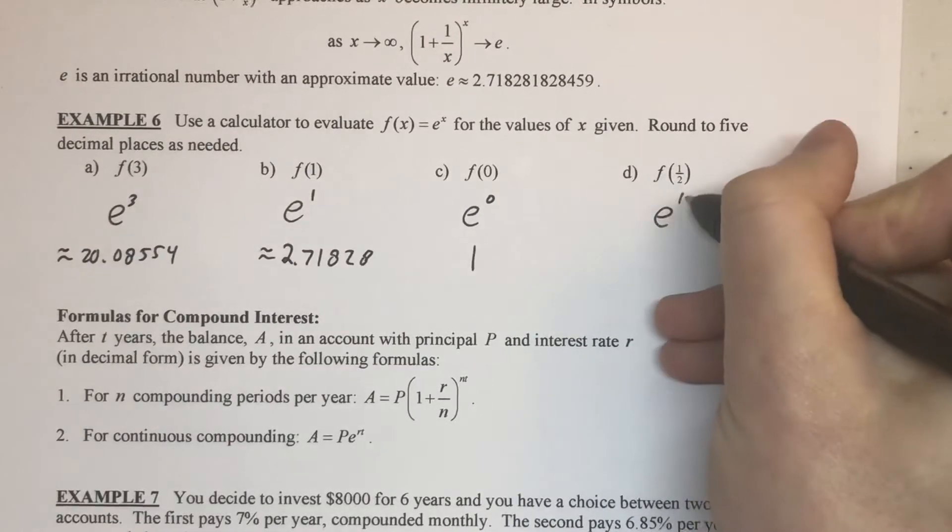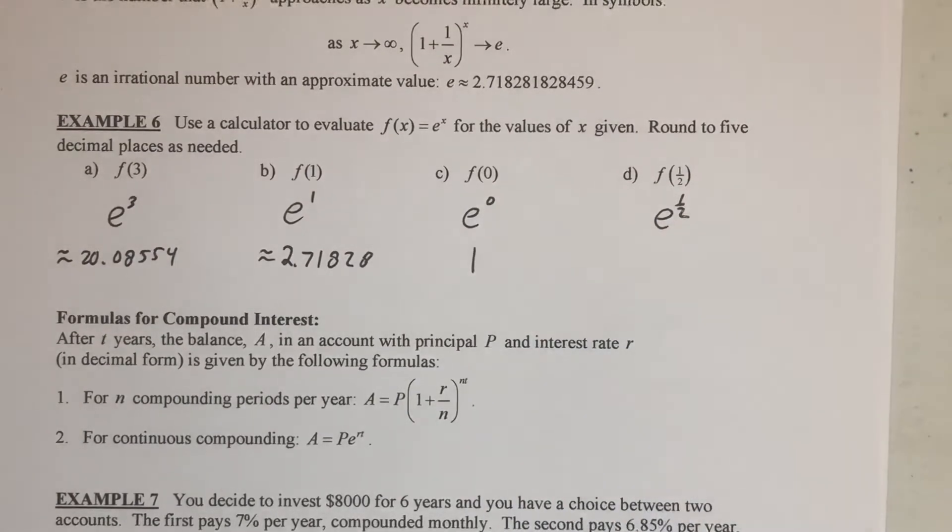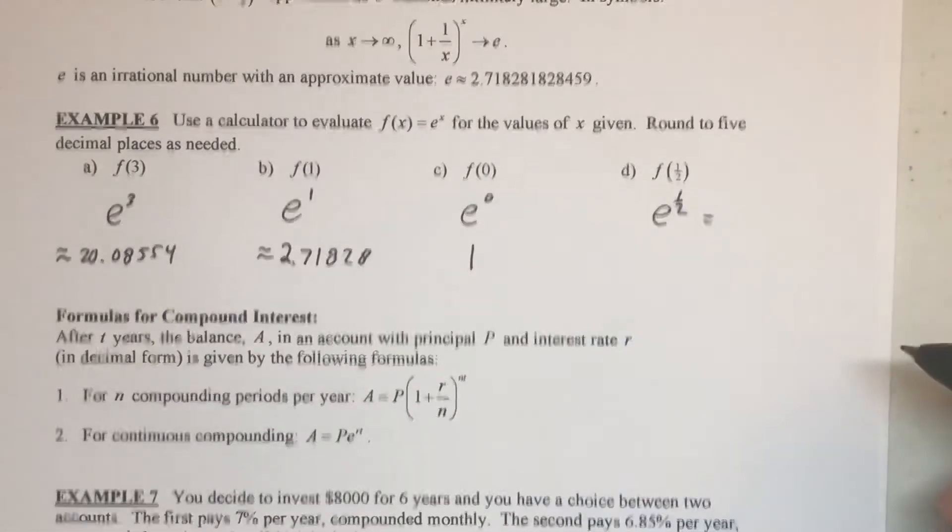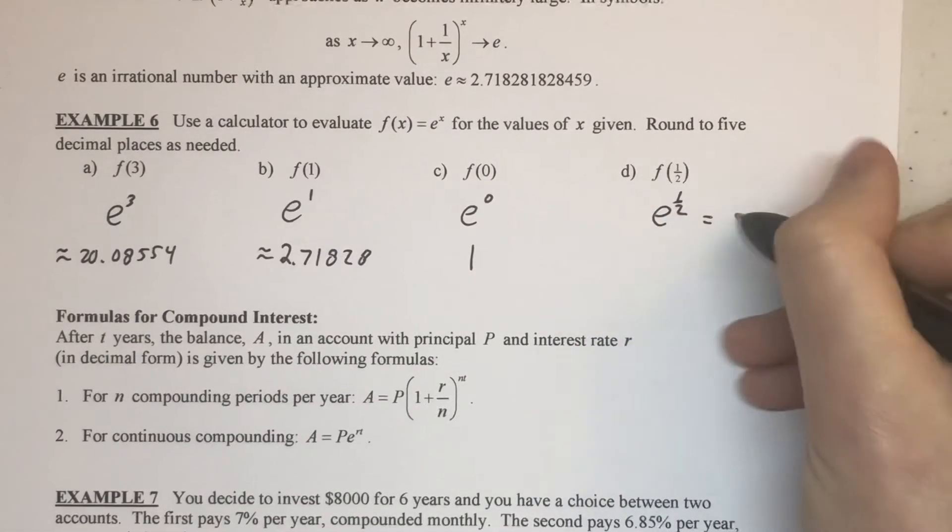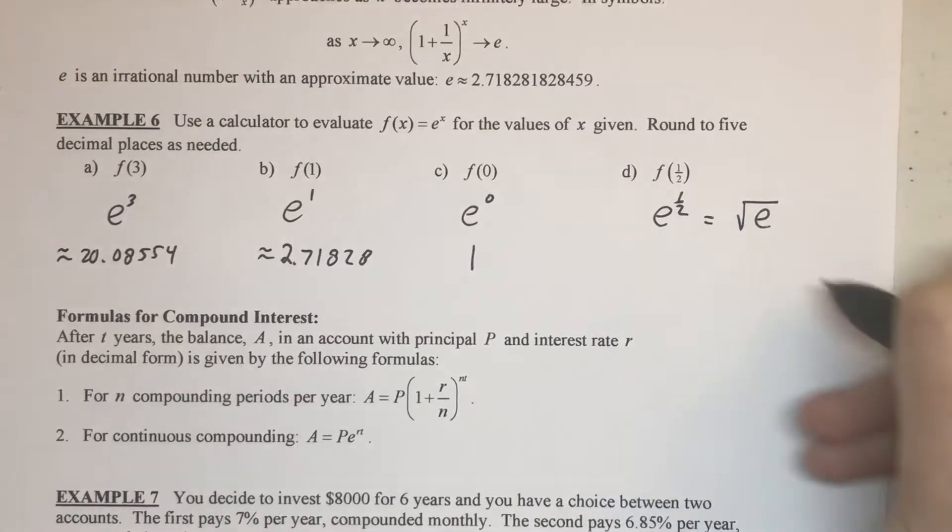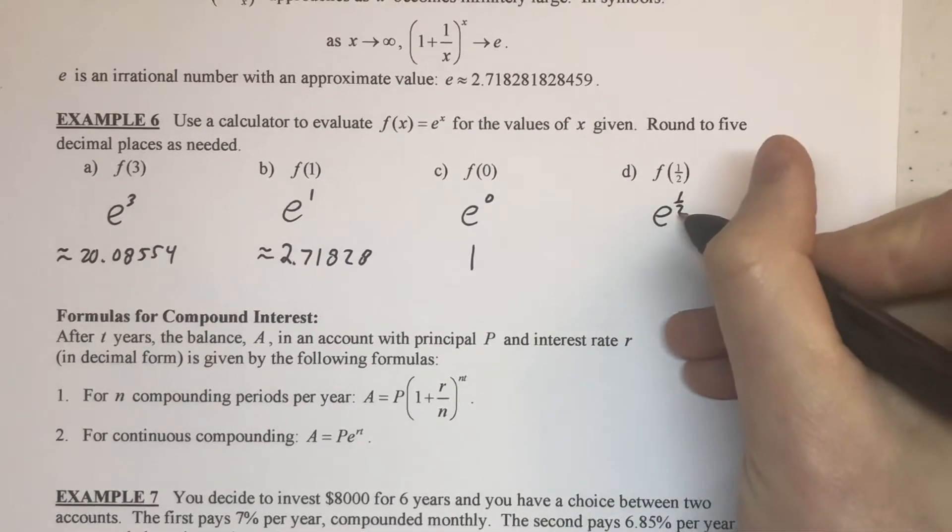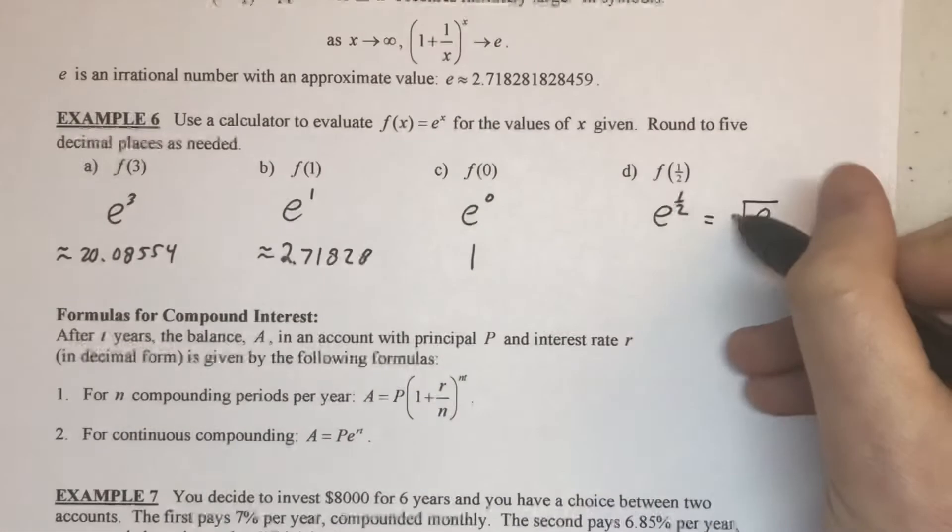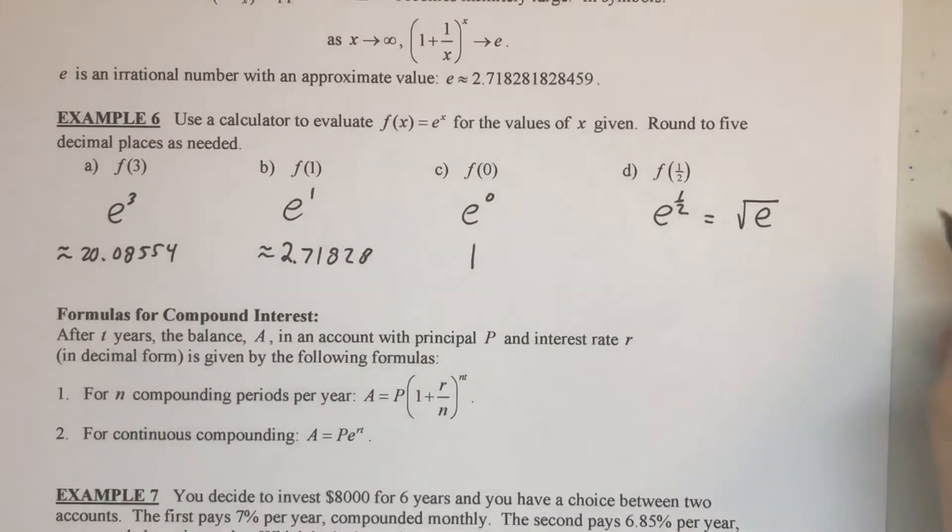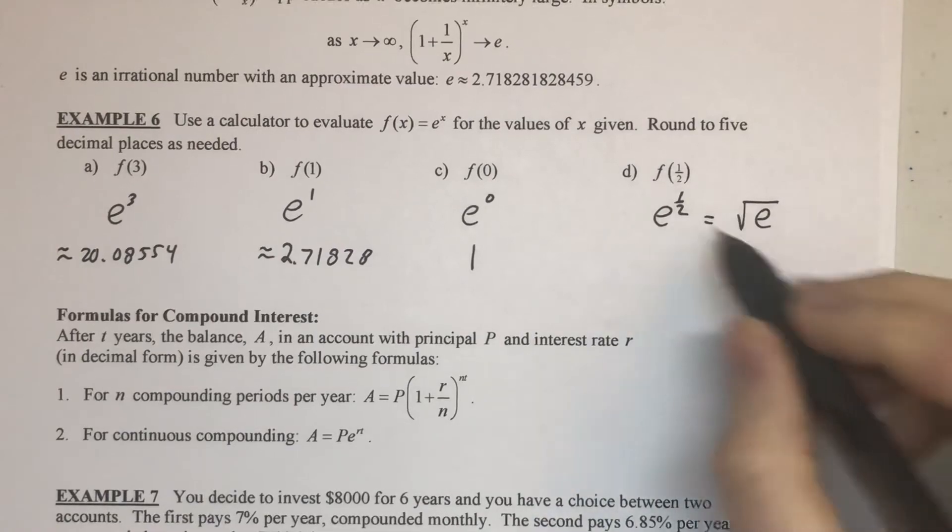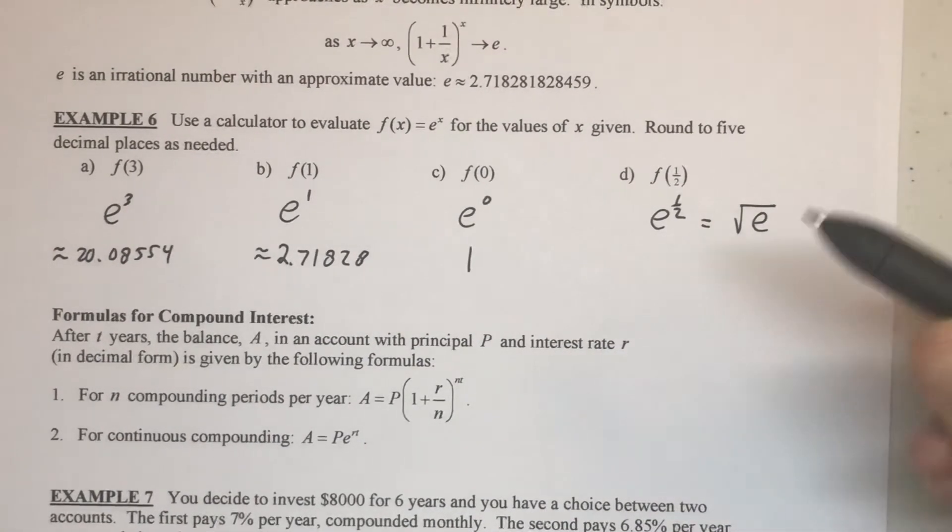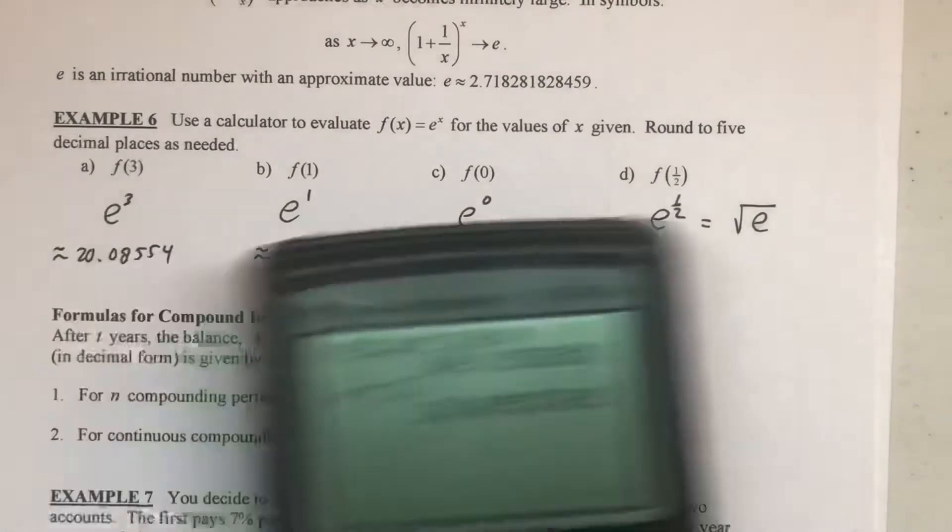And then e to the one-half, just to really quickly remind you about this, what we know about a fractional exponent, because we will definitely see these later on, the one-half power, remember that is actually the same as the square root. The denominator of that power is like the root of the radical. So, we'll see this again, certainly, this idea of fractional exponents. But as far as calculating it, we'll go ahead and throw it in a calculator.